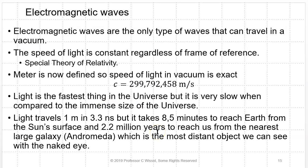Electromagnetic waves are the only type of waves that can travel in a vacuum. Every other wave requires a medium — sound waves require air, water, or something to travel in. You can't hear screaming in space, but you can see it. Electromagnetic waves travel better in vacuum than in anything else. Think about it: there are 93 million miles of vacuum between the sun and the earth, and yet sunlight comes across that vacuum and lands on your face. That's absolutely cool.